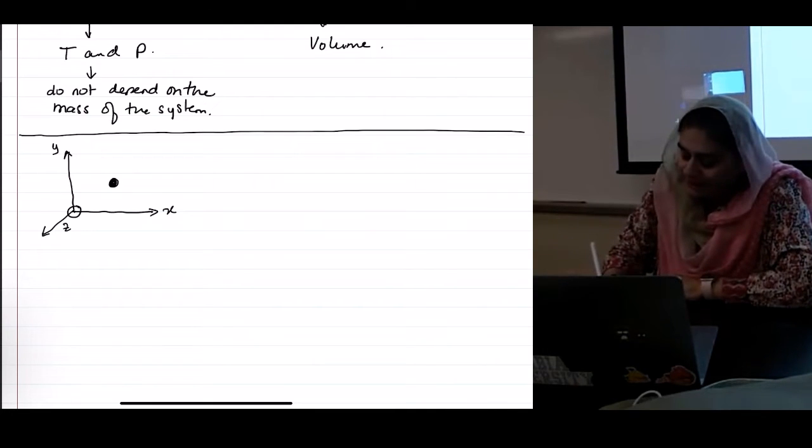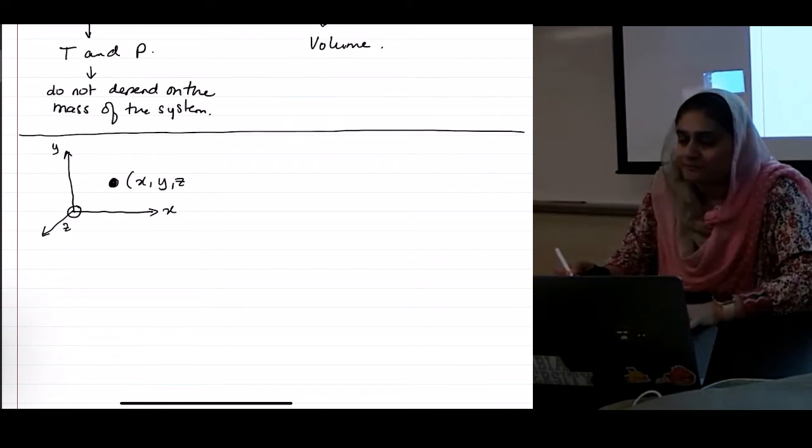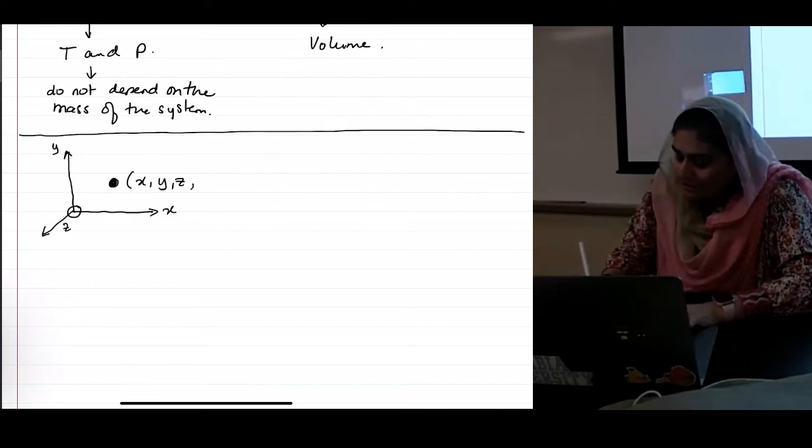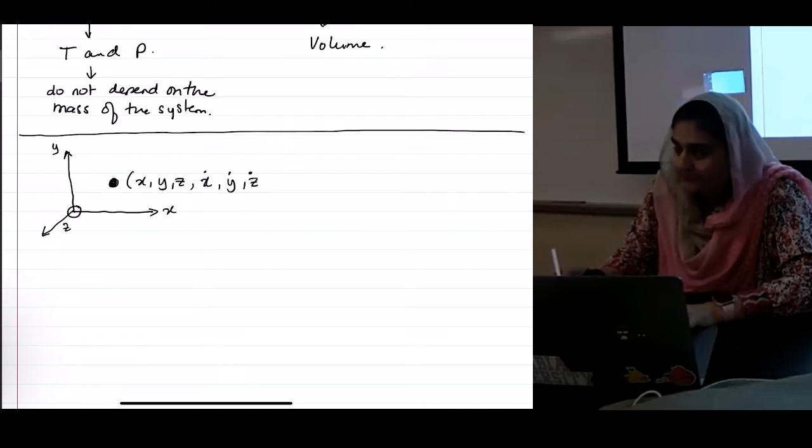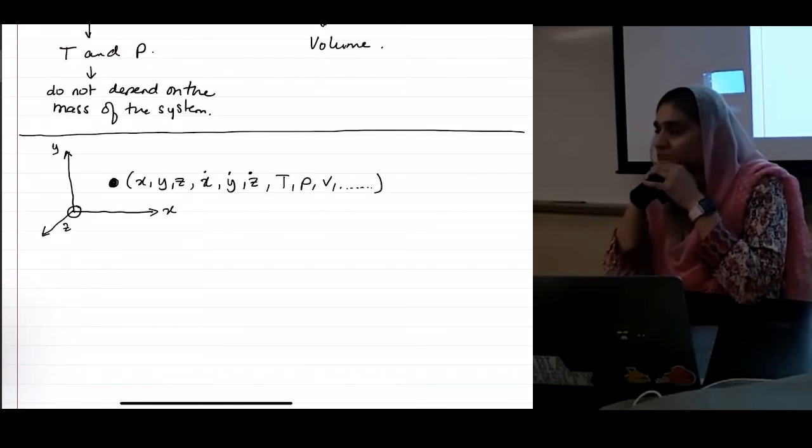So now how do I define this one mass particle? What do I need? I need to know its X, Y, Z. And I also need to know its velocities if it's moving. I will probably also need to know its temperature, pressure, volume.